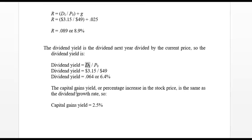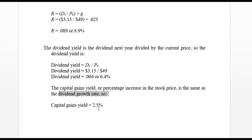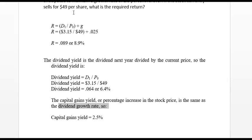The capital gains yield, which is the percentage increase in the stock price, is also the same as the dividend growth rate, or 2.5%. So the growth rate is 2.5%, the stock price goes up 2.5%, and our capital gains yield is 2.5%.